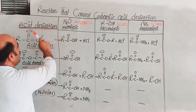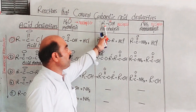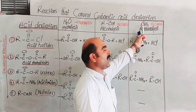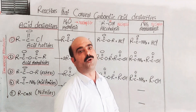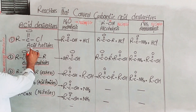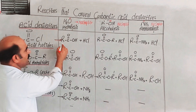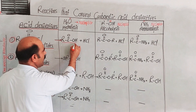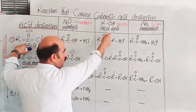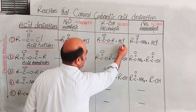Acid derivatives react with water — this reaction is called hydrolysis. The reaction with alcohol is called alcoholysis. Acid halides undergo hydrolysis, and the products are carboxylic acid and HCl.